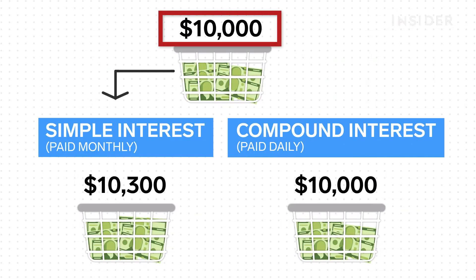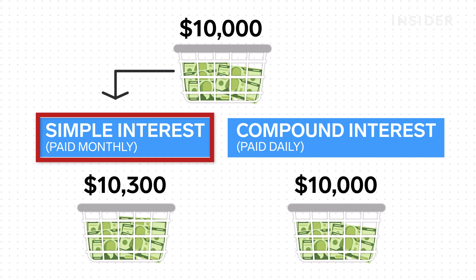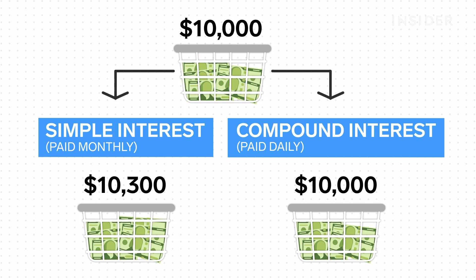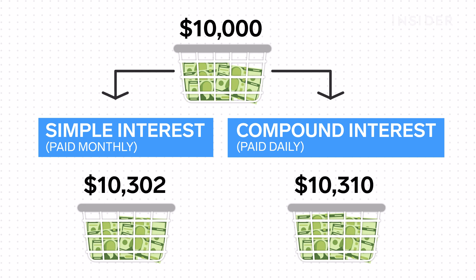Let's say you put $10,000 into a savings account and you don't plan on adding any more. The bank pays a 3% annual interest rate, and it pays that interest to you monthly. With simple interest, you earn interest only on that $10,000 balance every month, and at the end of one year, you have $10,300. But if you put this in an account that compounds interest daily, you'd have $10,305 at the end of one year. This may not sound like a huge difference, but that amount will continue to grow year after year, and you'll earn interest on even more if you continue to deposit money into that account.